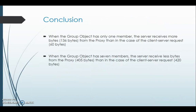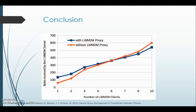While concluding, we see that when the group object has only one member, the server receives more bytes — 136 — from the proxy than in the case of the direct client-server request, which was only 60 bytes. However, when the group object has seven members, the server receives fewer bytes from the proxy — 405 — than in the direct client-server case, which was 420 bytes. As you can see from the graph, as the number of LWM2M clients increases, the bytes received by the LWM2M server also increases.